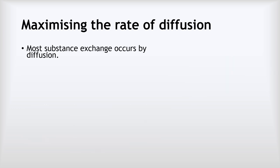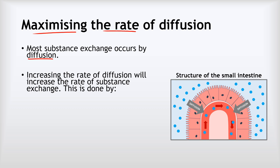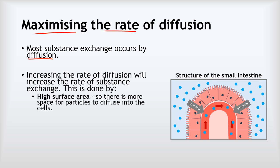Most substance exchange in the body occurs by diffusion, so many parts of our body are adapted in ways that will maximise the rate of diffusion. We can do this in a few ways. The first is by increasing the surface area, giving something a high surface area. If we look at this structure of the small intestine, we can see all these little wiggles really increase the surface area, which makes it much easier and faster for molecules to diffuse through and into the blood.